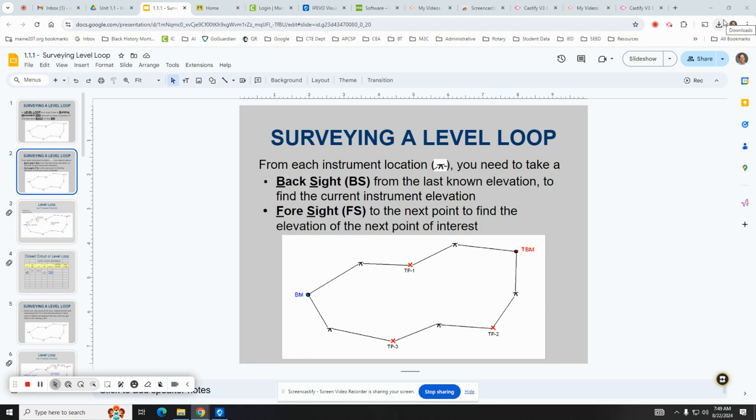Before we get started we need to make sure we understand what a level loop is and what the foresight and the back sight are. So a level loop, the concept behind a level loop is that when you survey you survey in a circle and when you end up back at your original spot you've got to hopefully end up back at the same elevation or within a certain amount, a difference of the elevation that is small enough that it's essentially negligible.